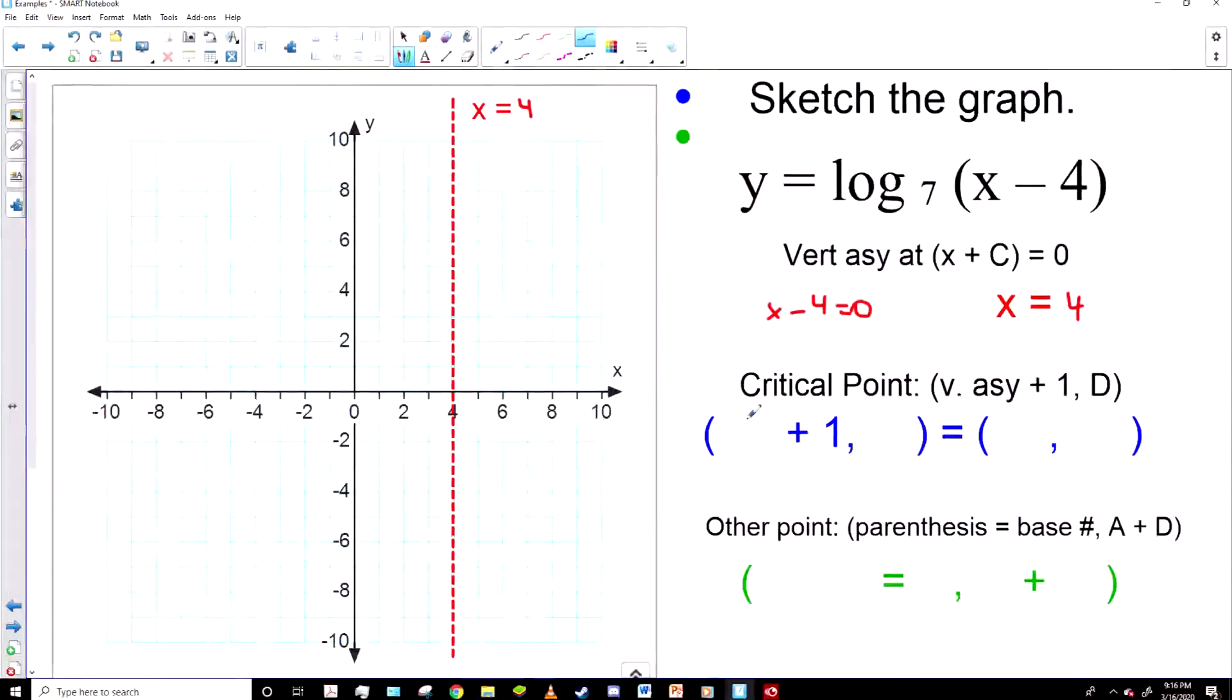And to find the critical point, we take that asymptote, which is four, and add one. Because the critical point is one point further over to the right of the asymptote line. And then the D term in this case, there isn't one, so it's zero.